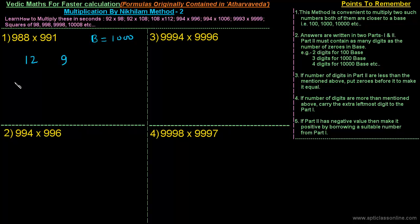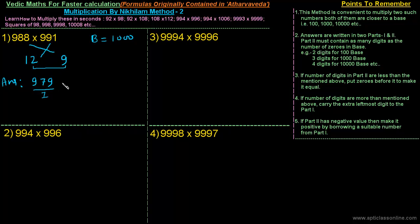Once you have done that, we can write down the answer directly. The answer is written in two parts. In the first part we write the difference: 988 minus 9, or 991 minus 12, which is 979. That is the first part. The second part is the multiplication of 12 and 9 — twelve nines are 108. That is the second part.